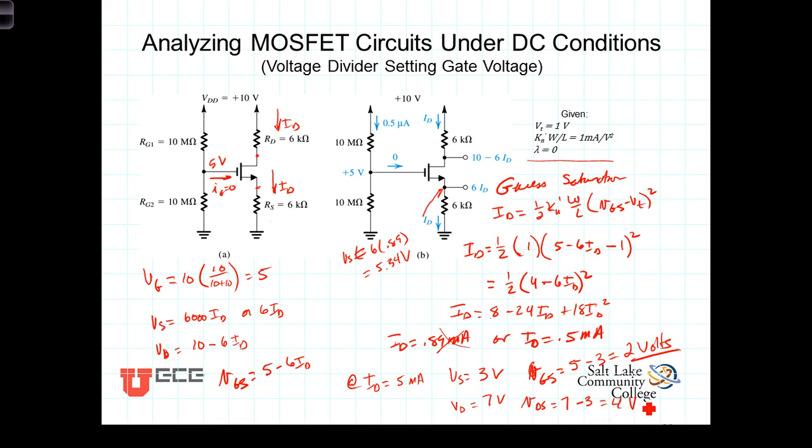So now we've got V_DS equaling 4 volts, V_GS equaling 2 volts and sure enough V_DS is greater than V_GS minus V_T. V_GS is 2 volts minus V_T of 1 is 1 volt. So V_DS of 4 is greater than 1 volt and our guess that we were in the saturation region was correct. And all these different values that we calculated are correct also.